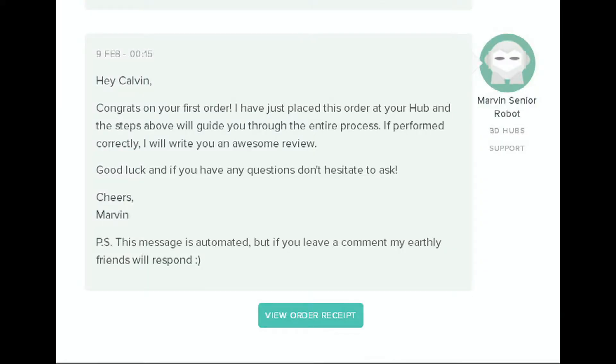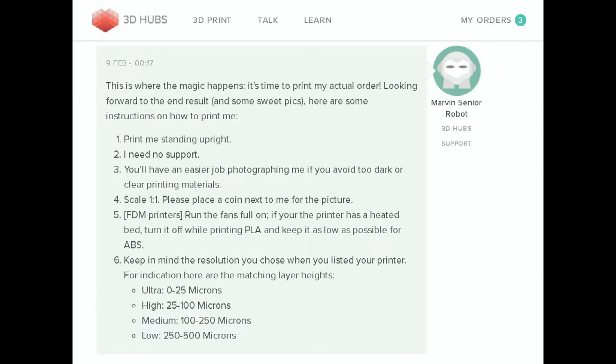So once your hub is all set up and ready to go, the first thing that 3D Hubs will do is send you the Marvin model as a test print. It also gives you a good walkthrough of how the system works if you have any problems. It's pretty easy to figure things out without real orders and real reputations being on the line.